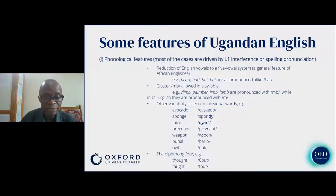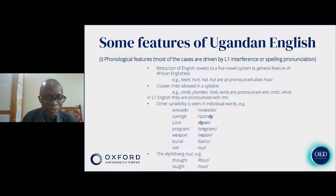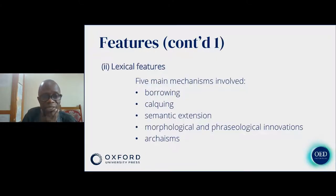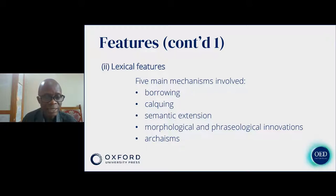There is also variability in individual words driven by spelling pronunciation, so words like 'avocado,' 'sponge,' and 'juice' are pronounced accordingly. We also have a diphthong 'o' driven by spelling pronunciation, so words like 'thought' and 'told' reflect this pattern. Regarding lexical features, there are five main mechanisms: borrowing, calquing, semantic extension, morphological and phonological innovations, and archaism.